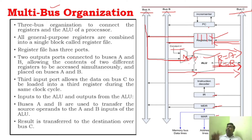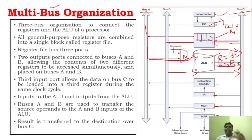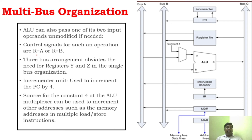In single bus organization, the PC performs all operations like PC select 4 and PC+4 to increment. But in multi-bus organization, there is an incrementer that automatically increments the PC directly — once an instruction completes, it moves to PC+4, then PC+8, and so on. The MAR has one input and one output; the MDR has two inputs and two outputs connected to all buses. The instruction register and decoder work the same as in internal bus organization.